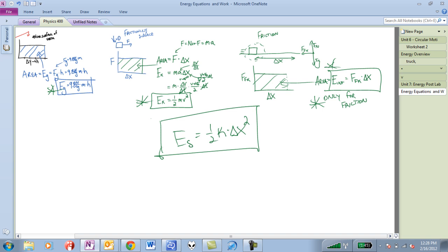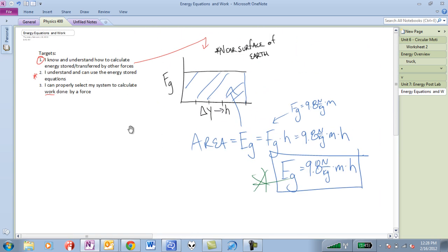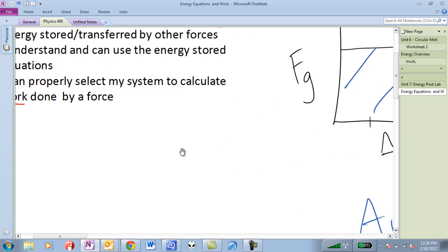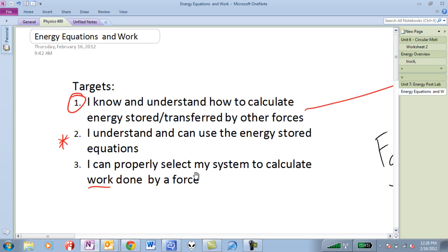So, this lesson really was based around, let me go back on over here, is really based around number one and number two. Number one being, I know and understand how to calculate energy stored transferred from other forces. Key idea here is, how do you calculate energy? It's always taking the area of the F versus delta X graph. You have equations now that are generalized for that. But the key idea is, you can always go to that F versus delta X graph. The other one that you see is, I can understand and use the energy stored equations. Make sure you know where they come from. Make sure you know how they're used. Make sure you do not use them in the wrong places.